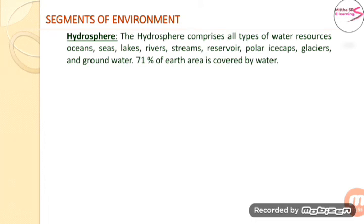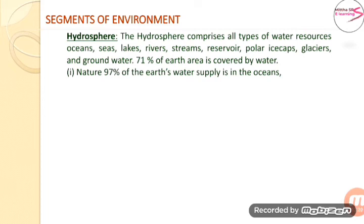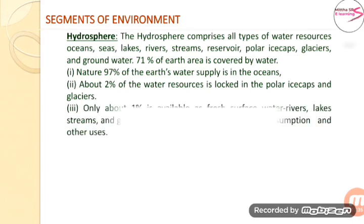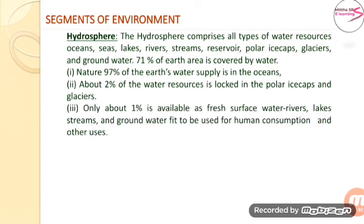The second segment is hydrosphere. The hydrosphere comprises all types of water resources like oceans, seas, lakes, rivers, streams, reservoir, polar ice caps, glaciers, and groundwater. About 71% of earth's area is covered by water. About 2% of the water resources is locked in the polar ice caps and glaciers. Only about 1% is available as fresh surface water — rivers, lakes, streams and groundwater — fit to be used for human consumption and other uses.